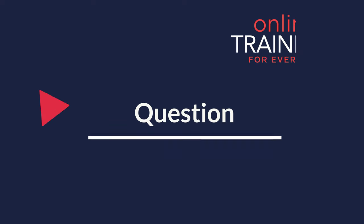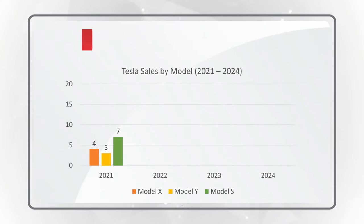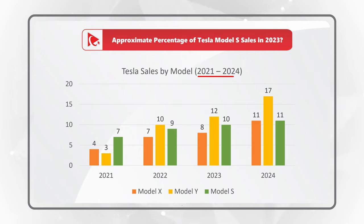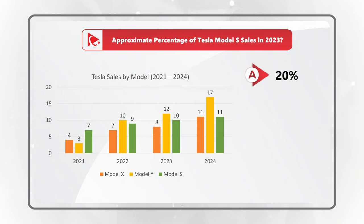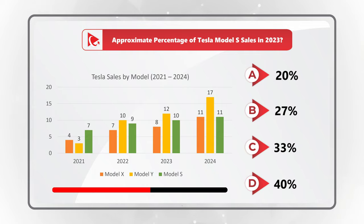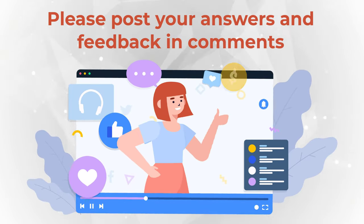Now it's an excellent time to test your skills. You need to determine the approximate percentage of Tesla Model S sales in 2023, using a chart showing sales by model between 2021 and 2024. Choices are: A) 20%, B) 27%, C) 33%, D) 40%. Give yourself a little time, do the mental math, and post your answer in comments. Good luck!